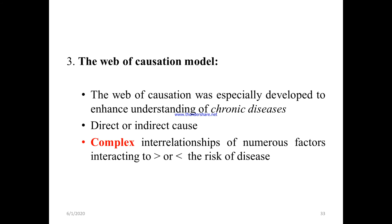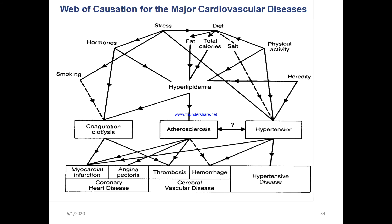The web of causation model was specially developed to enhance understanding of chronic disease, involving direct and indirect complex interactions. There are a number of factors that interact to increase or decrease the risk of disease. For example, in major cardiovascular disease, different factors include hormones, stress, diet, physical activity, heredity, and so on.